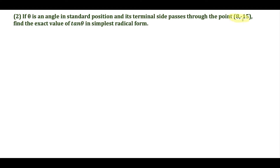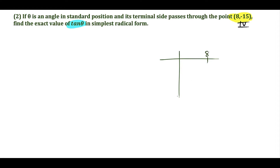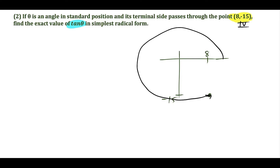For the second question, things are more difficult because now we're in quadrant four. We want to find tangent theta, and theta terminates at the point (8, -15), which is in quadrant four. Sketching this out, we're looking at the point (8, -15) down here. The angle theta spins from standard position all the way to quadrant four — that's this big angle going all the way to quadrant four.